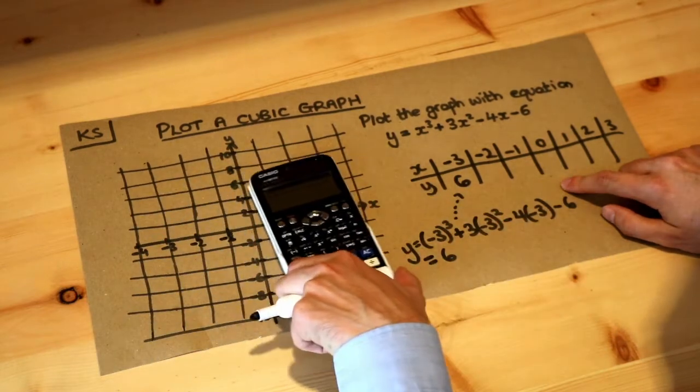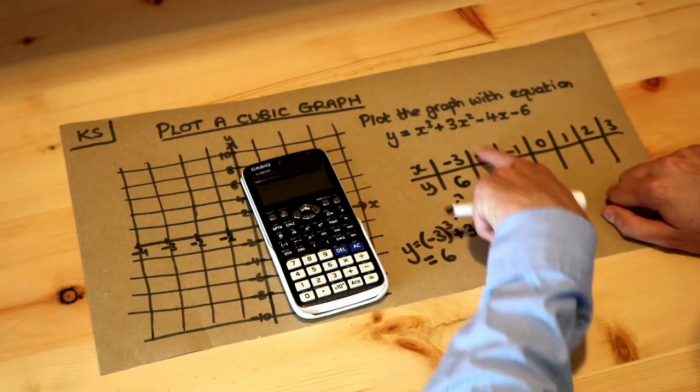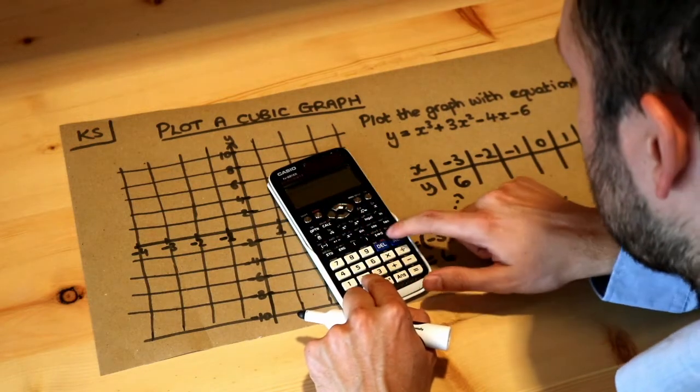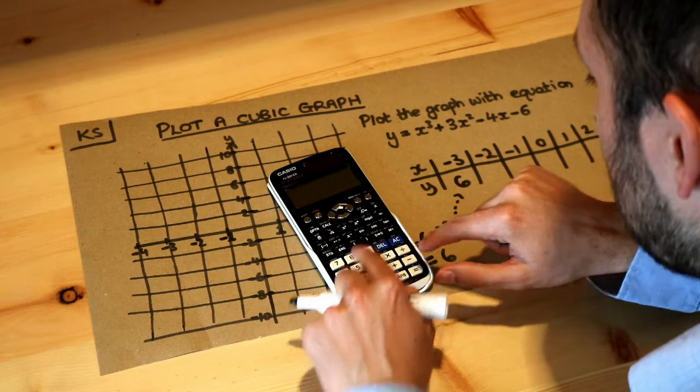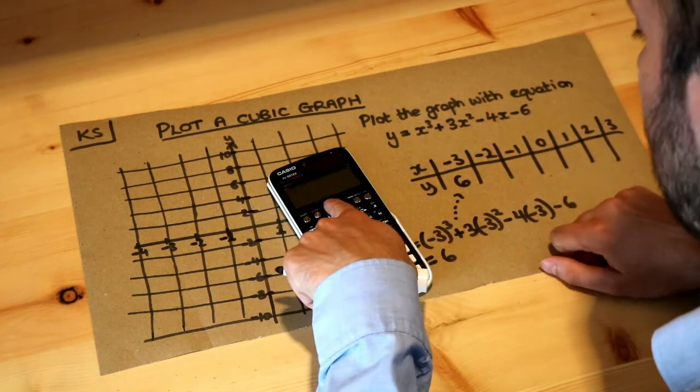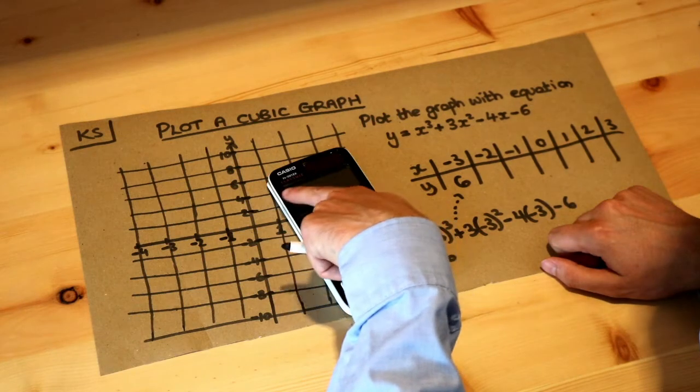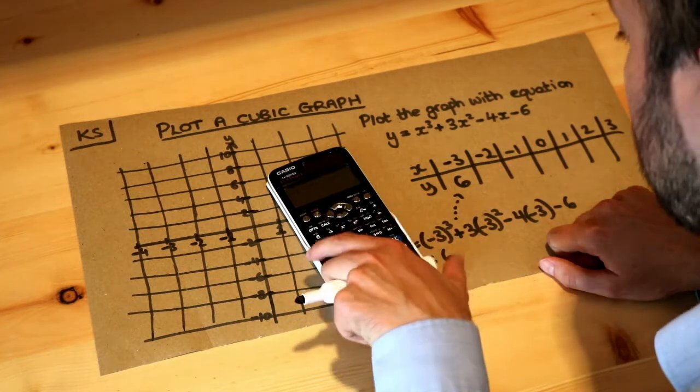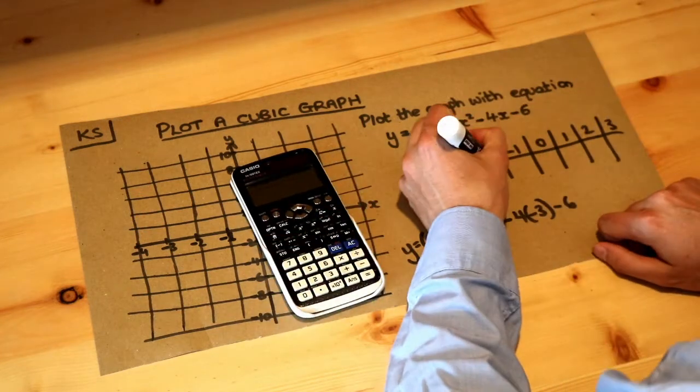Then what about minus 2? Again I would just substitute minus 2 into this expression, and if you're using a calculator I can just type in minus 2, making sure there's not an answer symbol there. So minus 2 equals, and then if I actually press the up button it will then go back to my previous expression where I typed in answer cubed plus 3 answer squared, press equals, and then it gives me 6 again.